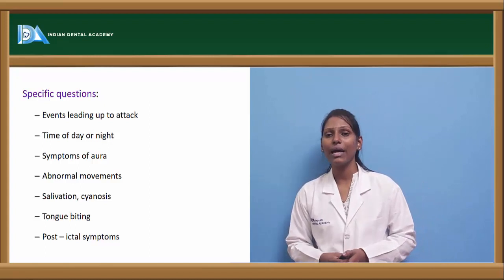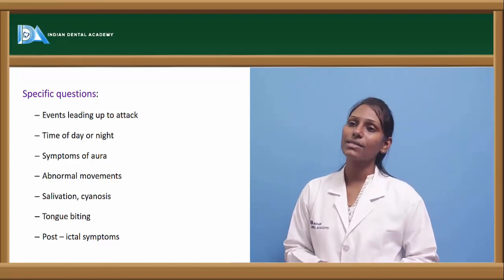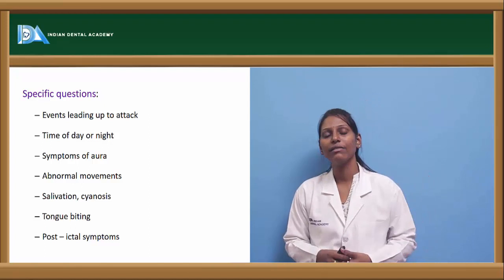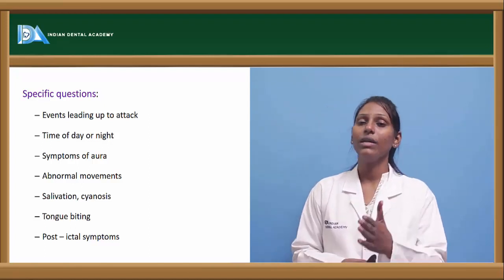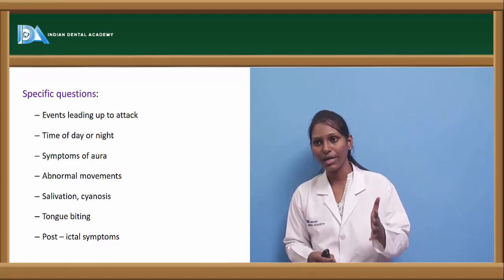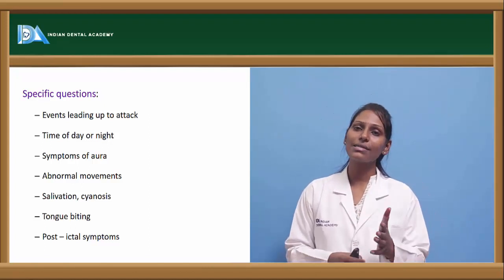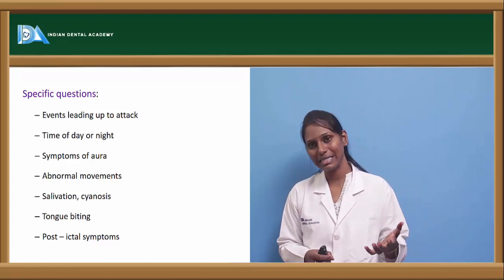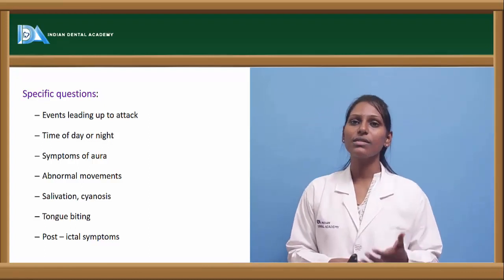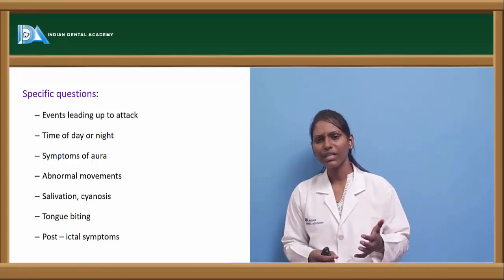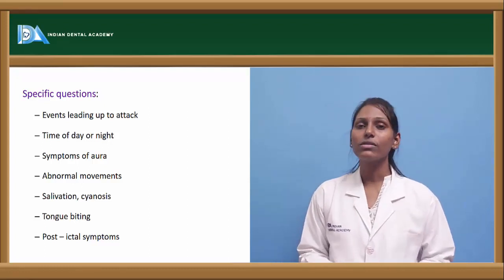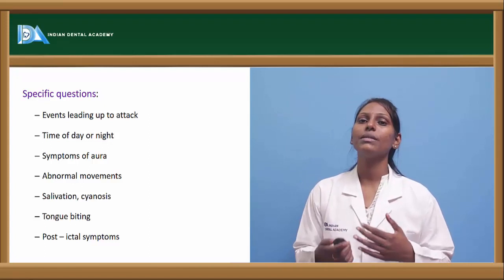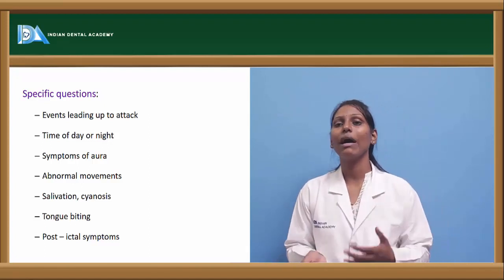Specific questions to ask in epilepsy include events leading up to the attack, triggering factors, whether attacks occur during the day or at night, any visual symptoms such as aura, and any abnormal movements. Also ask about salivation — whether frothy, normal, or excessive — and drooling. Check for cyanotic features, tongue biting, and post-ictal symptoms such as weakness, stupor, rigidity, and headache.